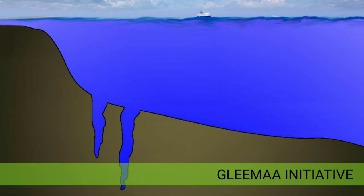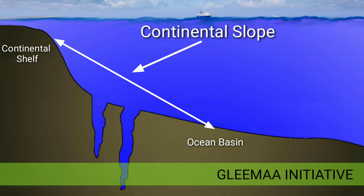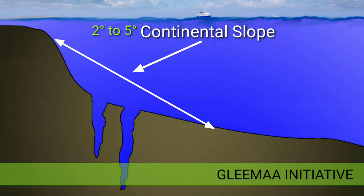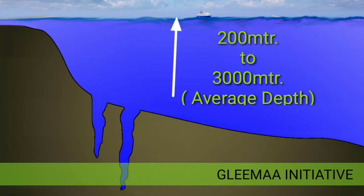The Continental Slope connects the Continental Shelf and the ocean basins. It begins where the bottom of the Continental Shelf drops off into a steep slope. The gradient of the slope regionally varies between 2 to 5 degrees. The depth of the slope region varies between 200 to 3000 meters. The slope boundary indicates the end of the continents.